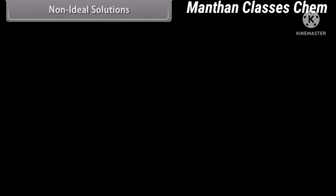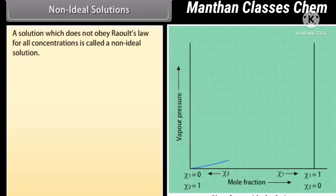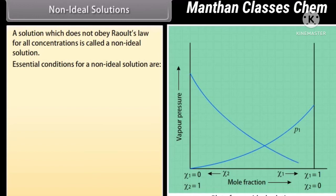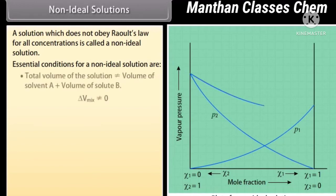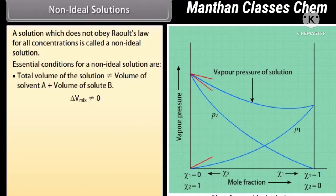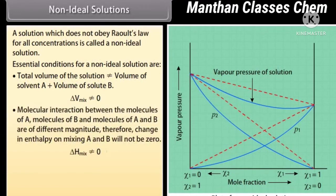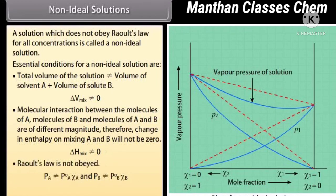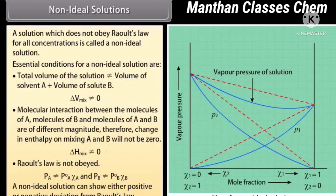Non-ideal Solutions: A solution which does not obey Raoult's law for all concentrations is called a non-ideal solution. Essential conditions include: the total volume of the solution is not equal to the sum of volumes of solvent A and solute B; molecular interactions between molecules of A, B, and A-B are of different magnitude, so the change in enthalpy on mixing is not zero. Raoult's law is not obeyed, and a non-ideal solution can show either positive or negative deviation.